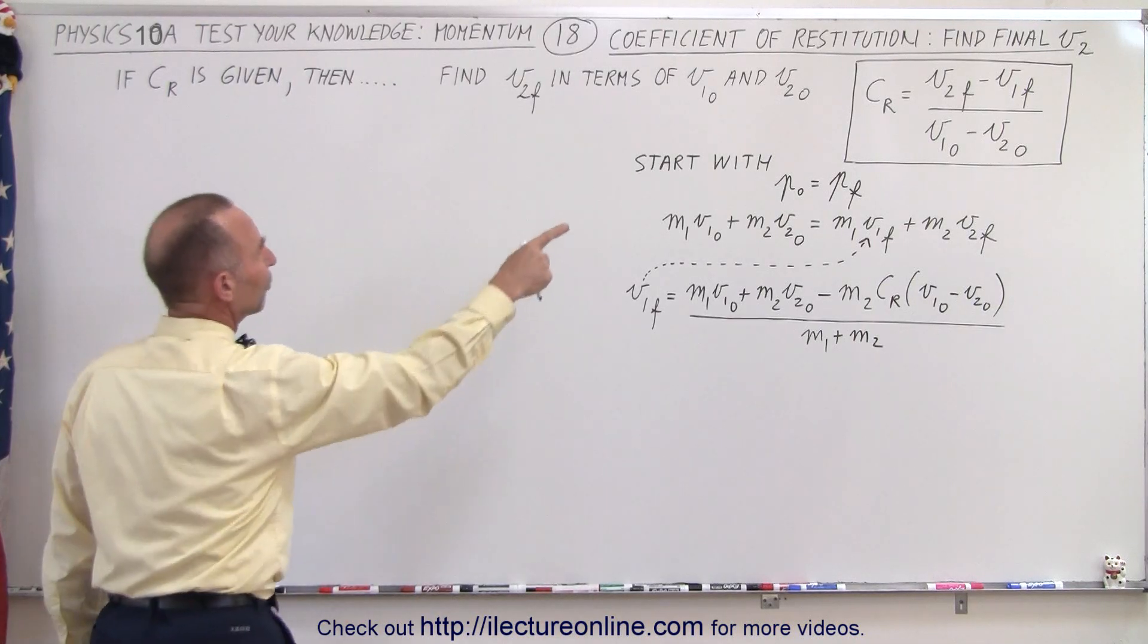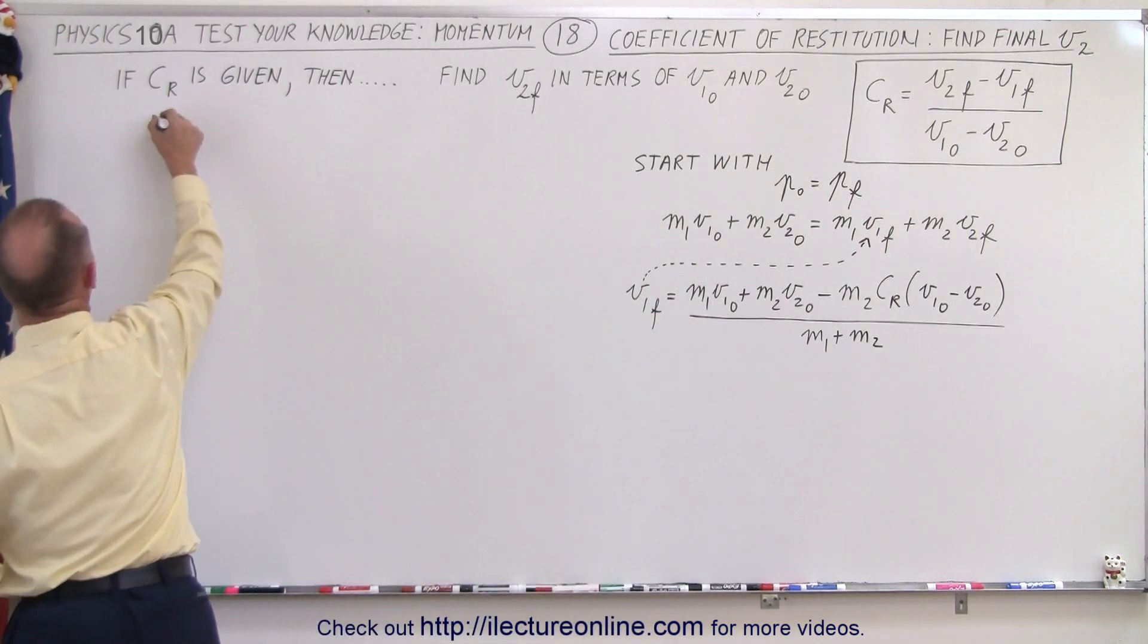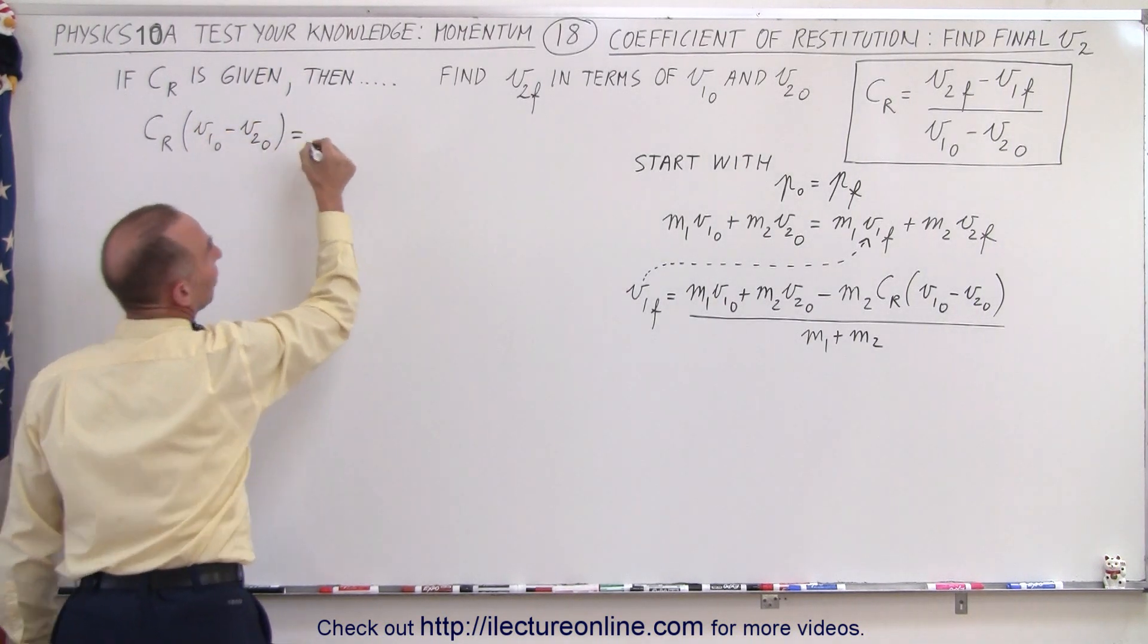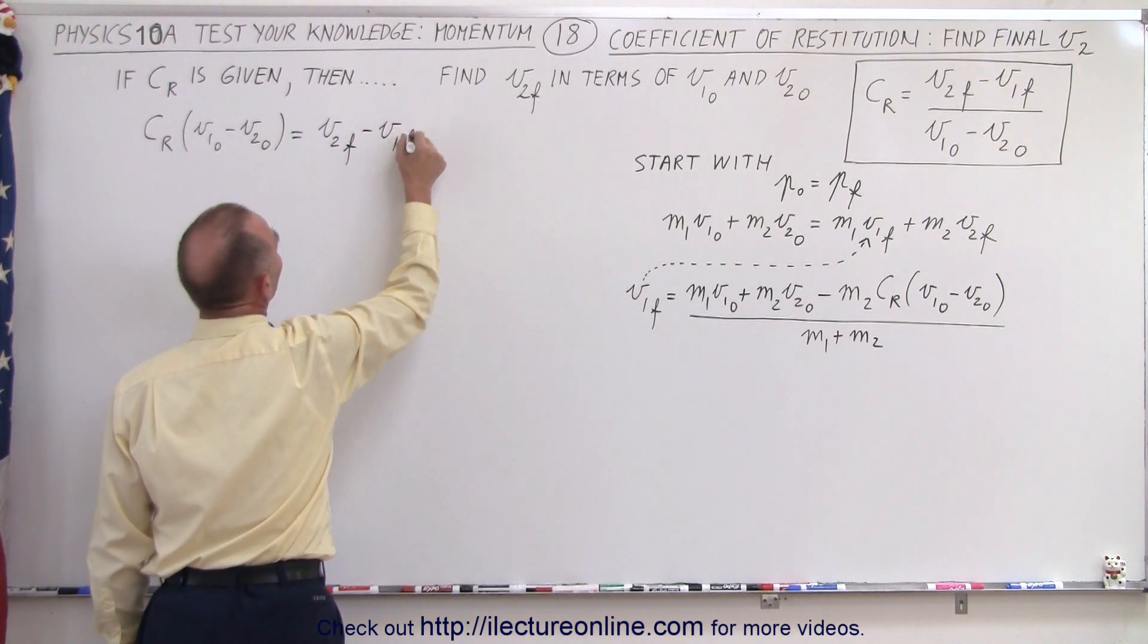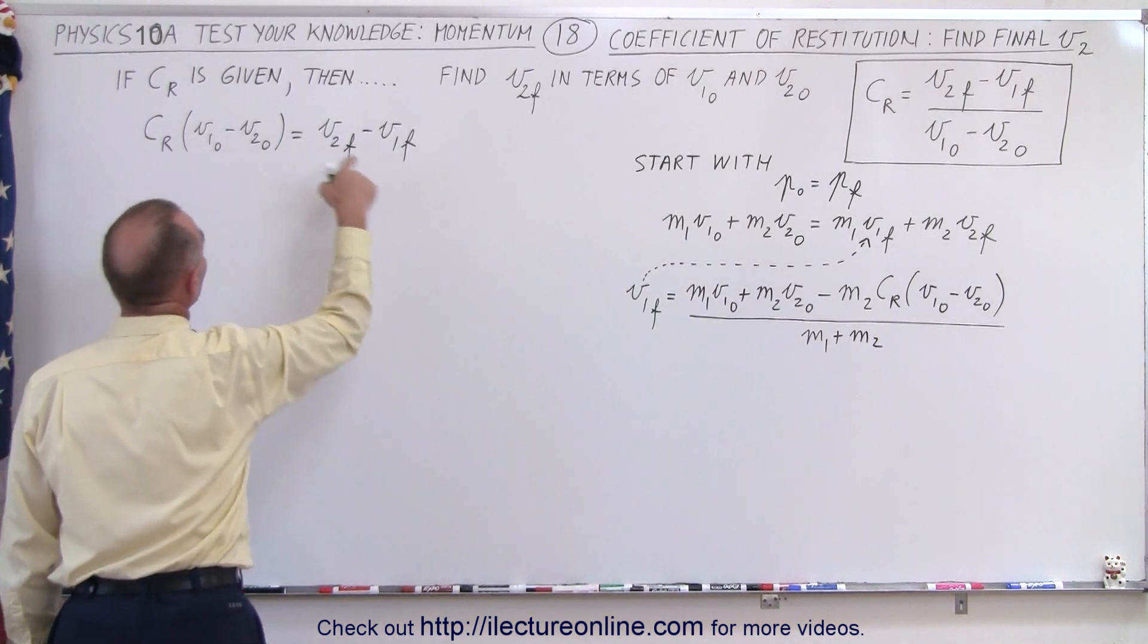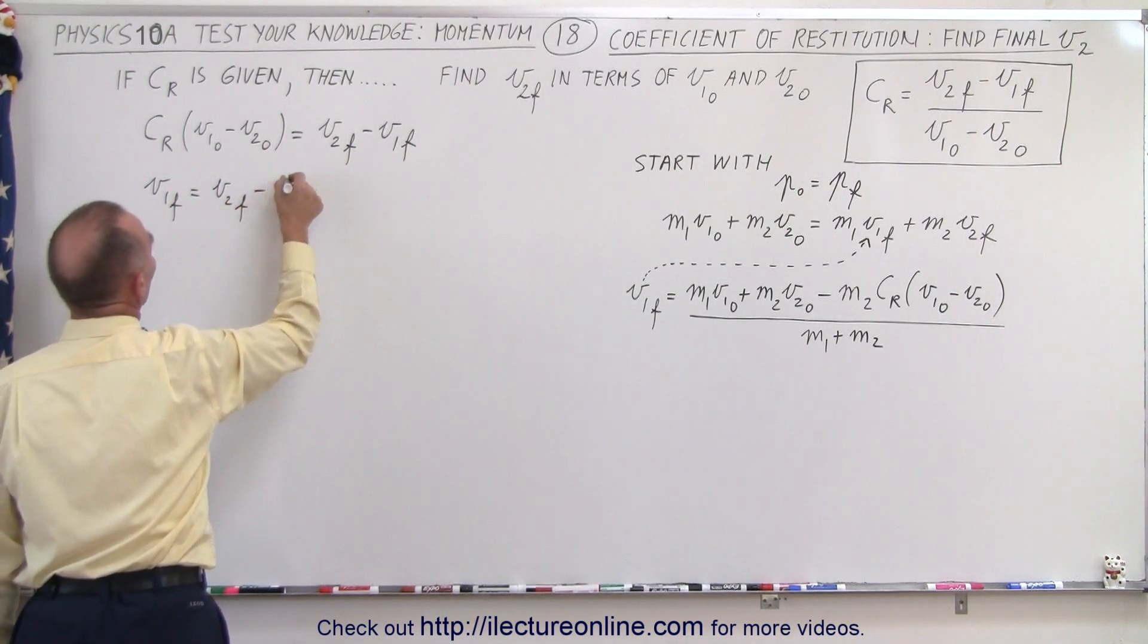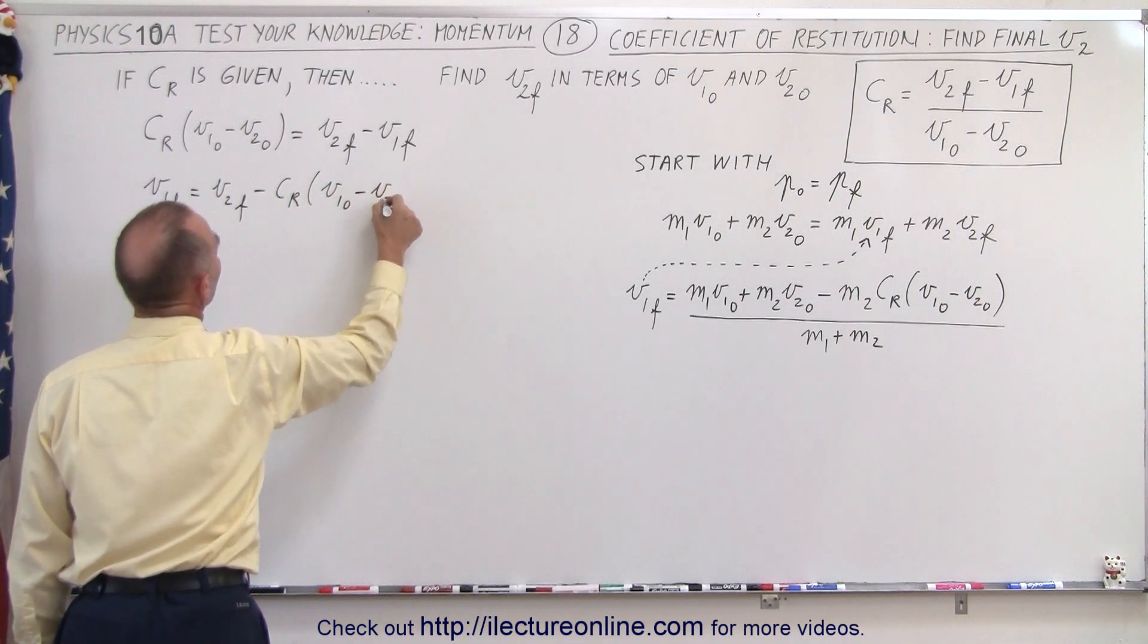So let's first take this equation right here and solve for V1 final. Which means that the coefficient of restitution times the denominator V1 initial minus V2 initial is equal to V2 final minus V1 final. And then of course I'm going to solve this for V1 final. So move this to the left, move that to the right. So we have V1 final equals V2 final minus the coefficient of restitution times V1 initial minus V2 initial.